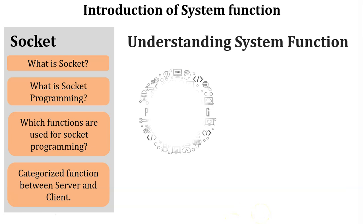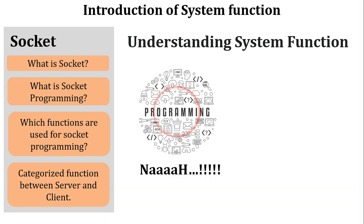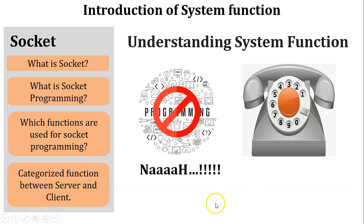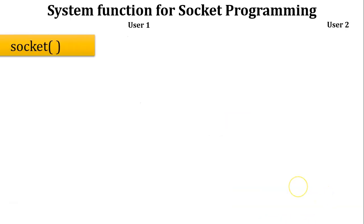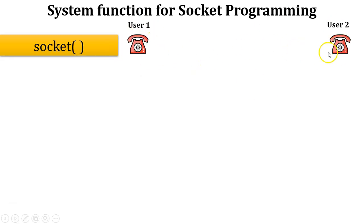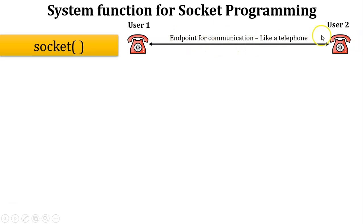Let's understand the system functions using the telephone analogy before going to the programming concept. The assumption is: client equals user1 and server equals user2. The first function is socket — as per its definition, the socket is an endpoint of two-way communication. Here a telephone is installed at user1's site and user2's site, so the socket is the endpoint for communication, just like a telephone.